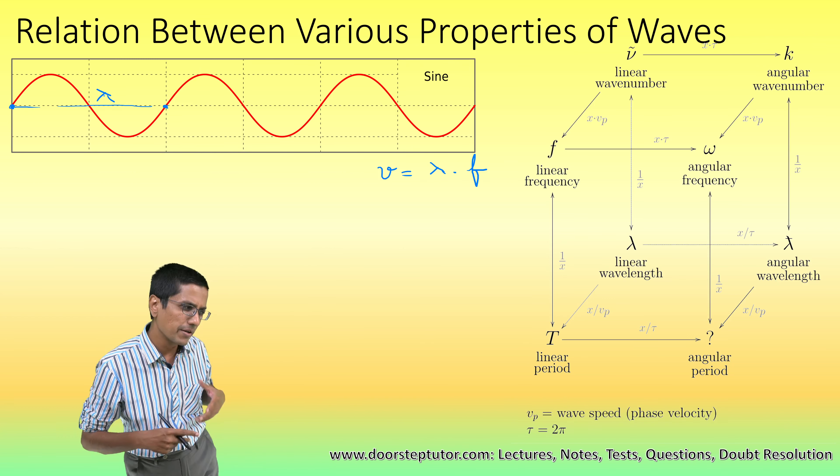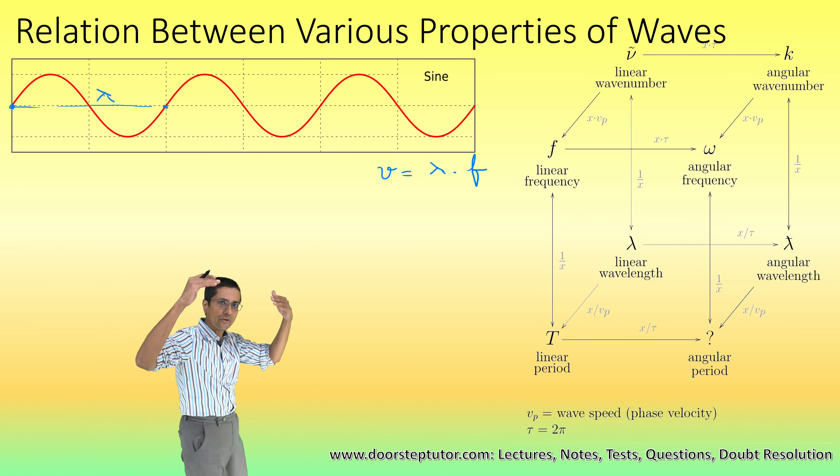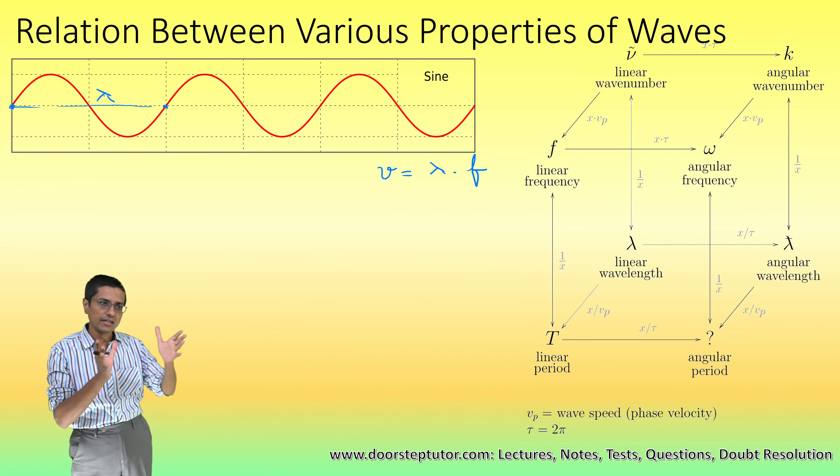You can measure the lambda, the wavelength, by looking at the two tops, the two crests of the wave, or two troughs, two bottoms of the wave. All of those will give you the wavelength.